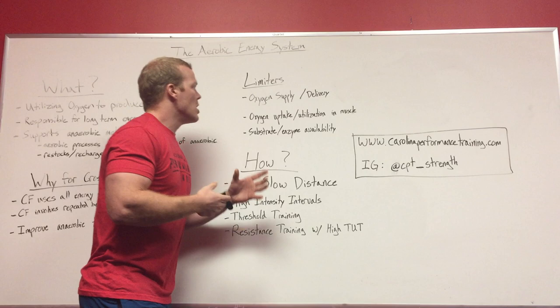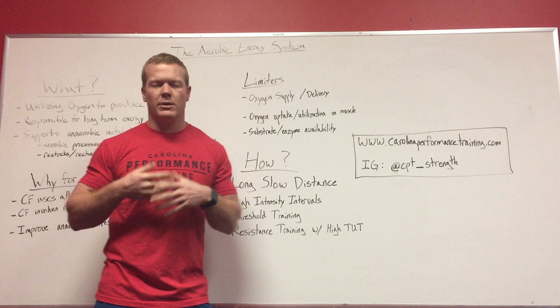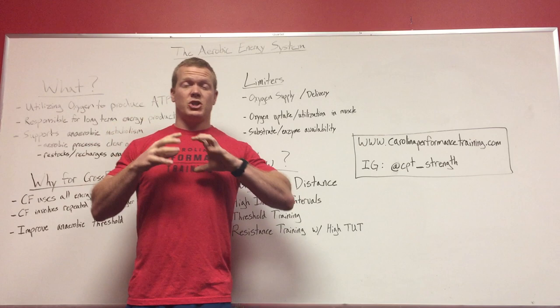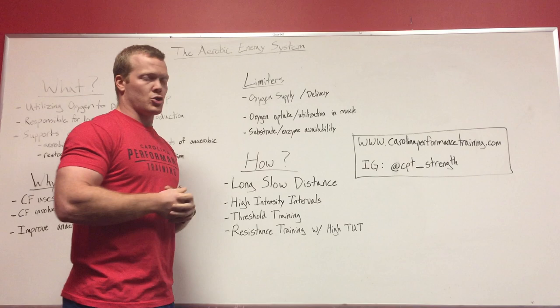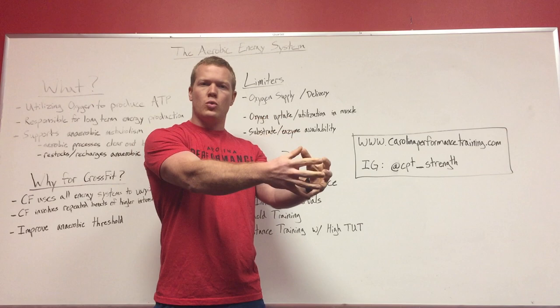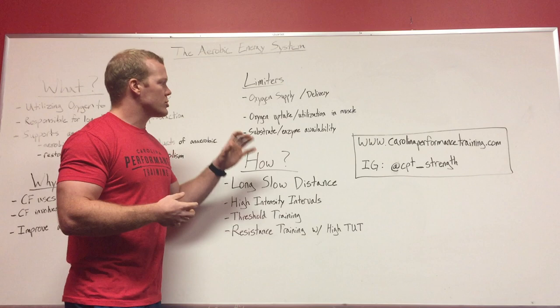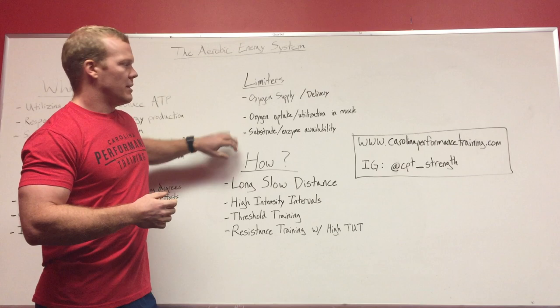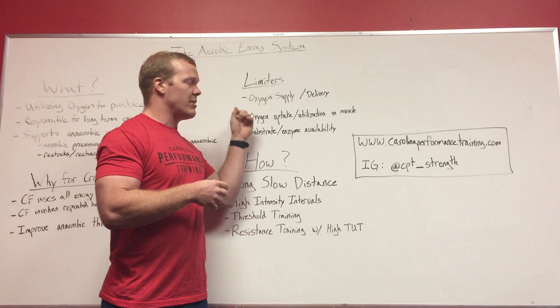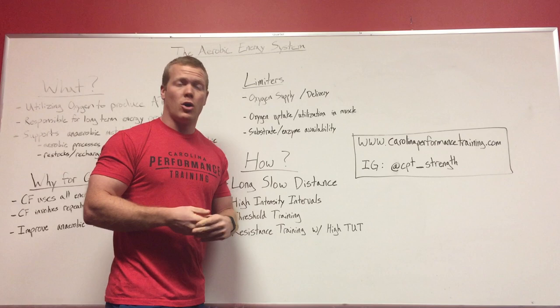When we talk about the actual limiters — the areas of the system we can focus on — there are really three. The first is oxygen supply and delivery. The second is oxygen uptake. And the third is substrate or enzyme availability. Those are essentially the three pillars of aerobic metabolism, and we can implement training protocols that focus on improving areas within each of them to improve our ability to generate ATP aerobically.